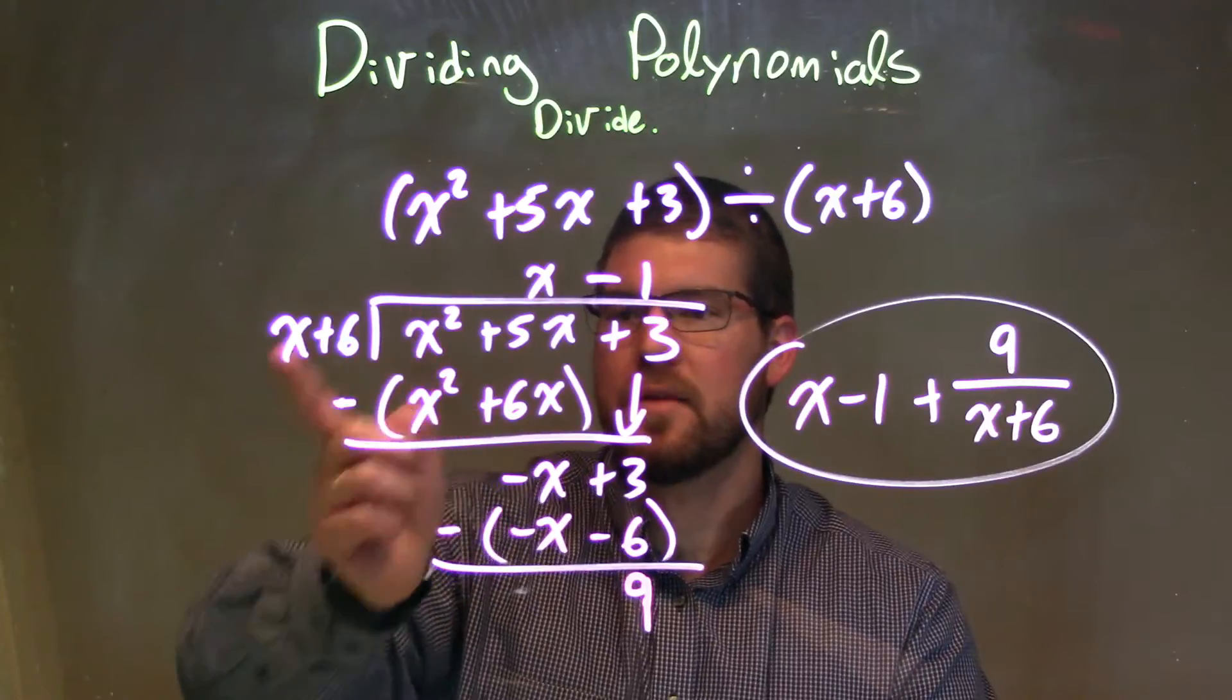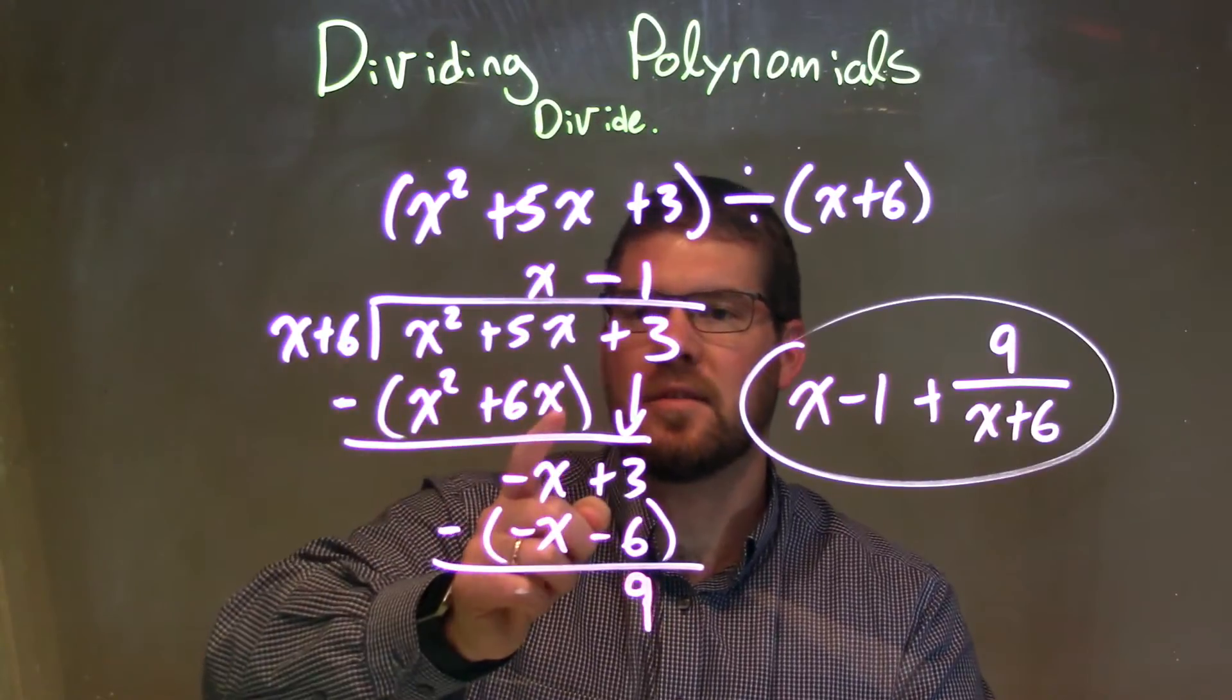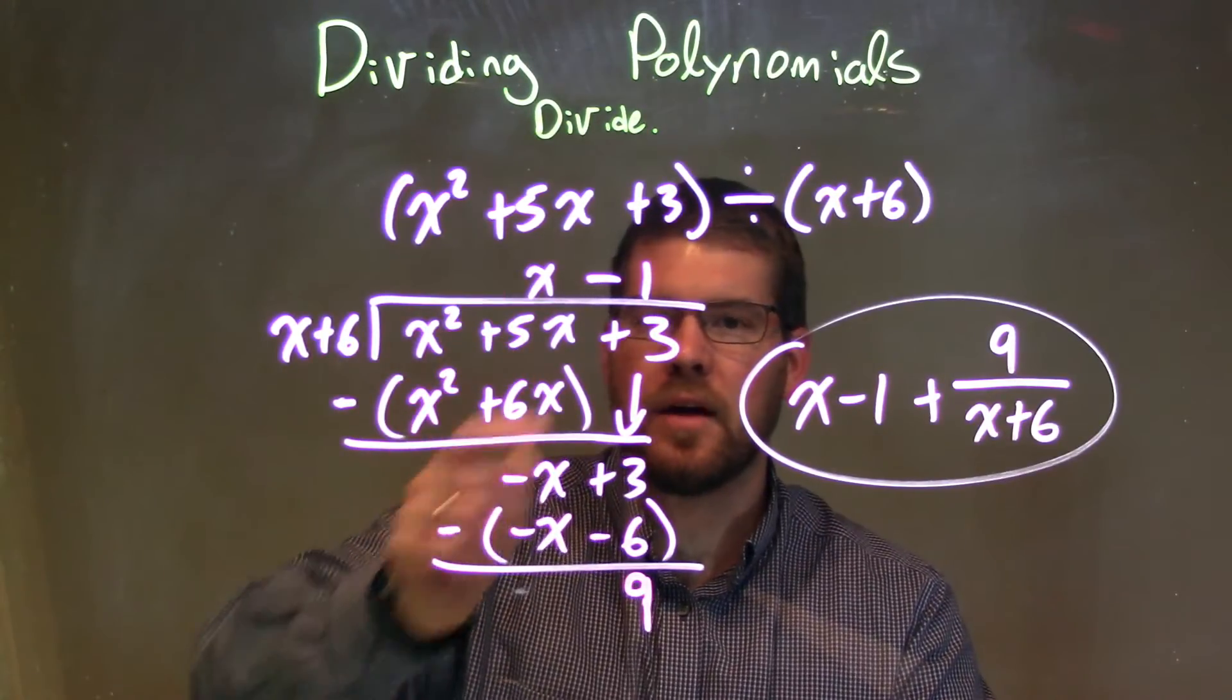So x times x is x squared. And x times 6 is 6x. Subtract the two, gave me a negative x, and I brought down the 3.